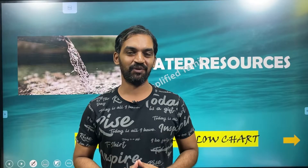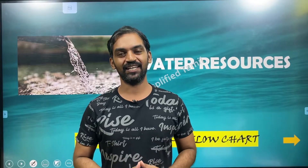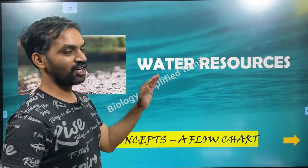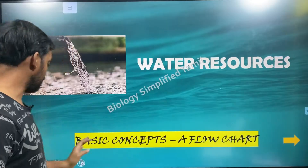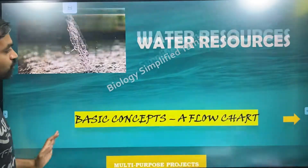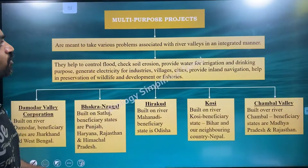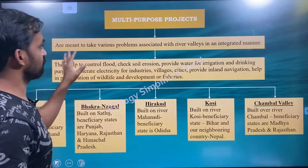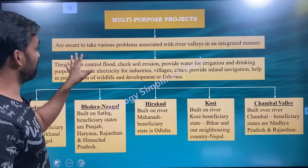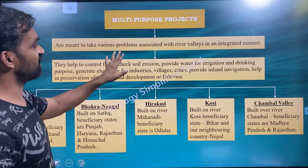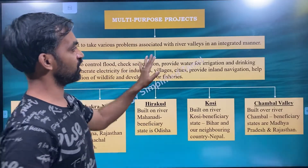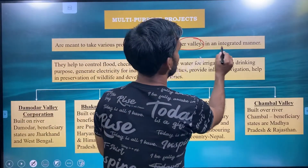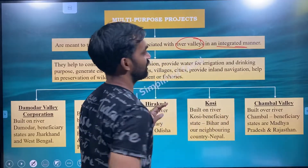Hi friends, welcome to Biology Simplified Tamil class 9 and 10. Now we are talking about water resources. Water resources are called multi-purpose projects. These are meant to take various problems associated with river valley in an integrated manner.